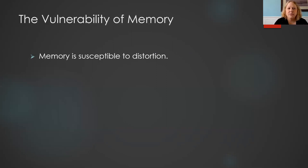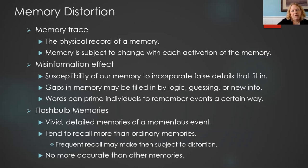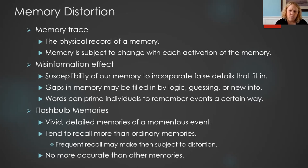Memory is also susceptible to distortion. Memory trace is the physical record of a memory. Every time we pull a memory out of long-term memory, it's subject to change. If we make any changes to that memory when we pull it up, when we go back and restore it, what we're storing is the revision instead of the original memory. The misinformation effect can help explain this — our brain is susceptible to filling in details because it doesn't like not having all the information. If there's a blank moment in a memory, our brain will try to fill it in, taking its best logical guess.